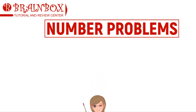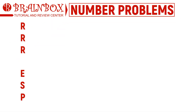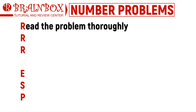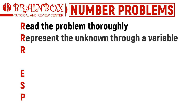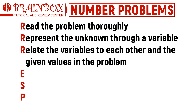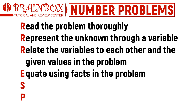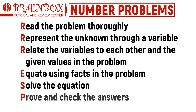For this video, we'll be talking about number problems. Recall that in doing word problems we have the Three R's and the ESP technique. The first R is when we read the whole problem thoroughly. The second R is we represent our unknown through a variable. The last R is relating the variables to each other and the given values. E is for putting these variables into an equation using the facts from the problem, then we solve this equation. Lastly, we prove and check if our answers match everything described in the problem.